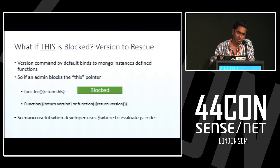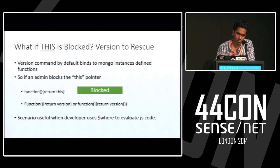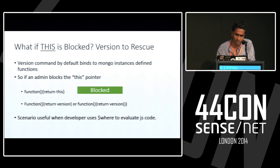What happens even if the 'this' pointer is blocked? The 'version' command — the main feature of version in Mongo is that it binds to all database objects by default. So even if the 'this' pointer is blocked, you could reuse the version command to return true. If you have a command evaluating to true and you specify the version command, it returns true and again you get to dump the data. This is used where you use the $where operator — $where is used in MongoDB to evaluate JavaScript code.